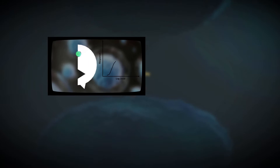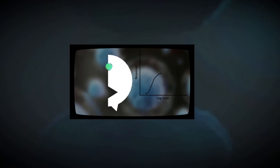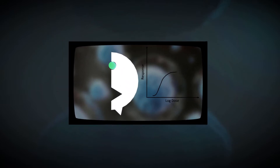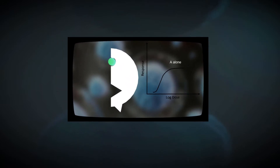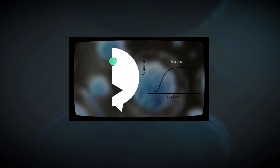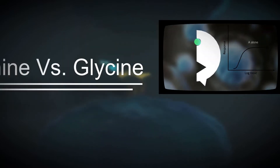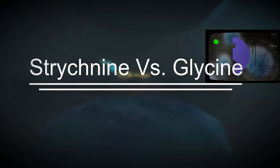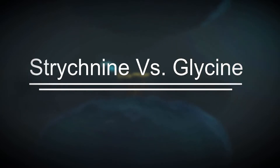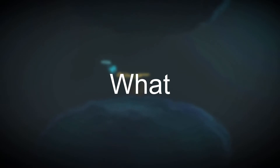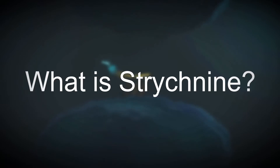In the last video we talked about how drugs can behave around receptors. Here we will go deep into one of the examples: strychnine, which acts as an allosteric inhibitor of glycine action. So what is strychnine?